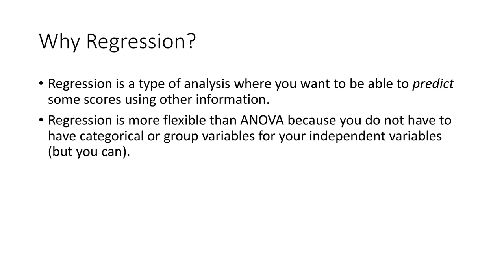But now maybe we want to predict someone's score — how well they're going to do in this class, based on the type of student or the program they pick, or what we expect them to do. Regression is actually more flexible than ANOVA because you don't have to stick to categorical IVs and continuous DVs. You can do continuous IVs and categorical IVs. We're going to stick with continuous DVs right now, but see the logistic regression video if you're interested in categorical DVs.